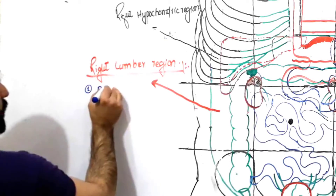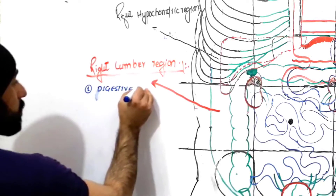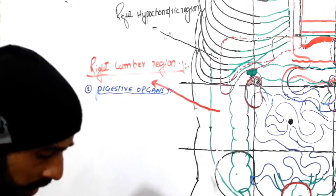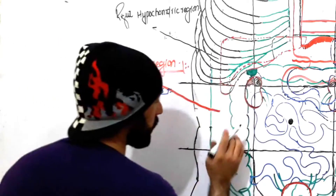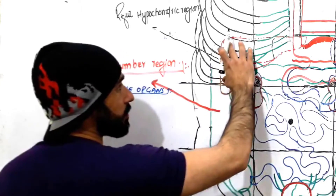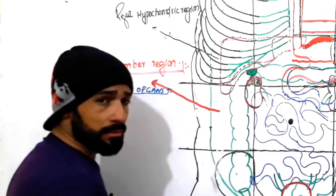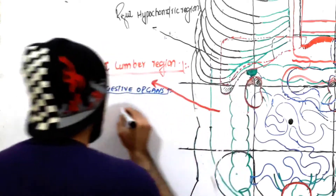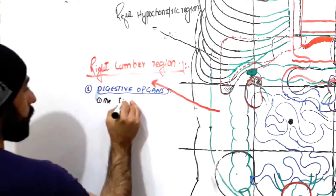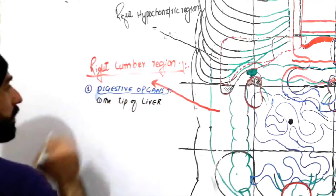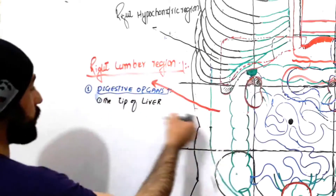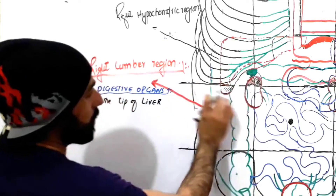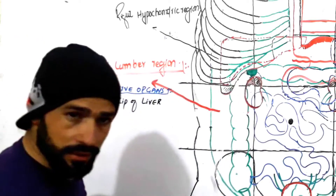If someone asks which digestive organ is present in your right lumbar region, the first digestive organ found there is the liver. Some parts of the liver are present in the right hypochondric region, some in the epigastric region, and a very little part — the tip of the liver — is also found in the right lumbar region. So liver is a digestive organ present in the right lumbar region.